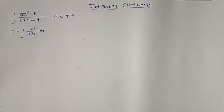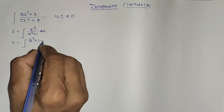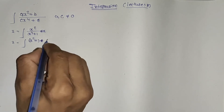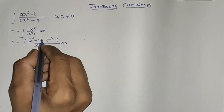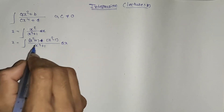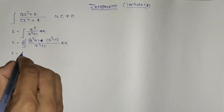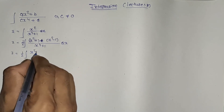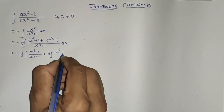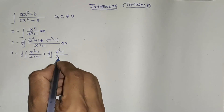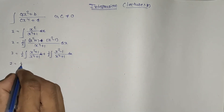We can write I equal to integration of (x² + 1) plus (x² - 1) divided by (x⁴ + 1) dx. Here 2x² + 1 - 1 cancels to give 2x², so we divide by 2. Now I equals one-half integration of (x² + 1)/(x⁴ + 1) dx plus one-half integration of (x² - 1)/(x⁴ + 1) dx.